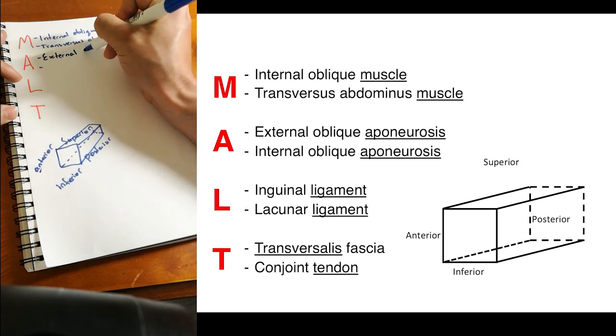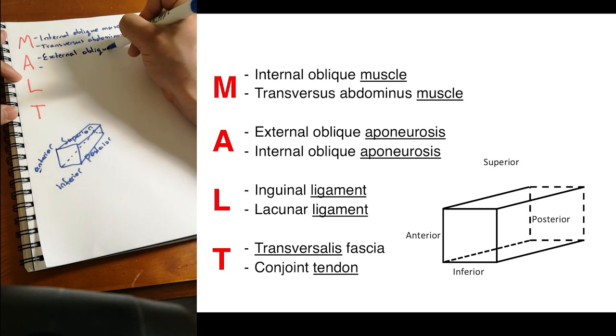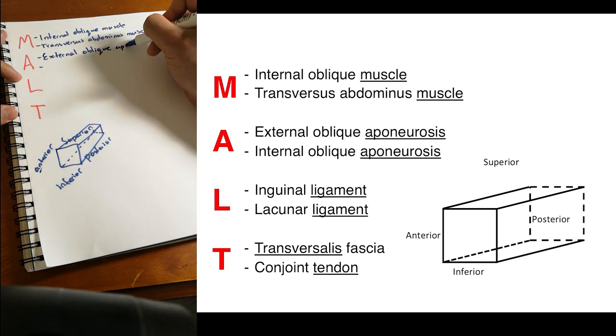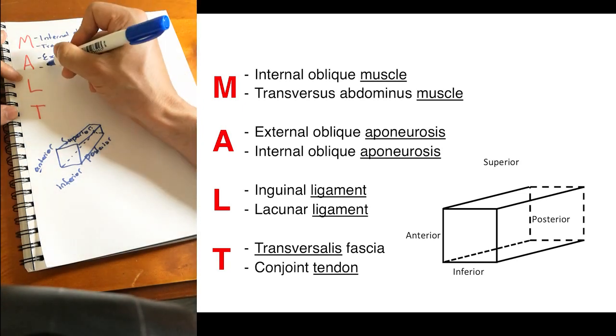And they are two aponeuroses. So there's the external oblique aponeurosis and the internal oblique aponeurosis.